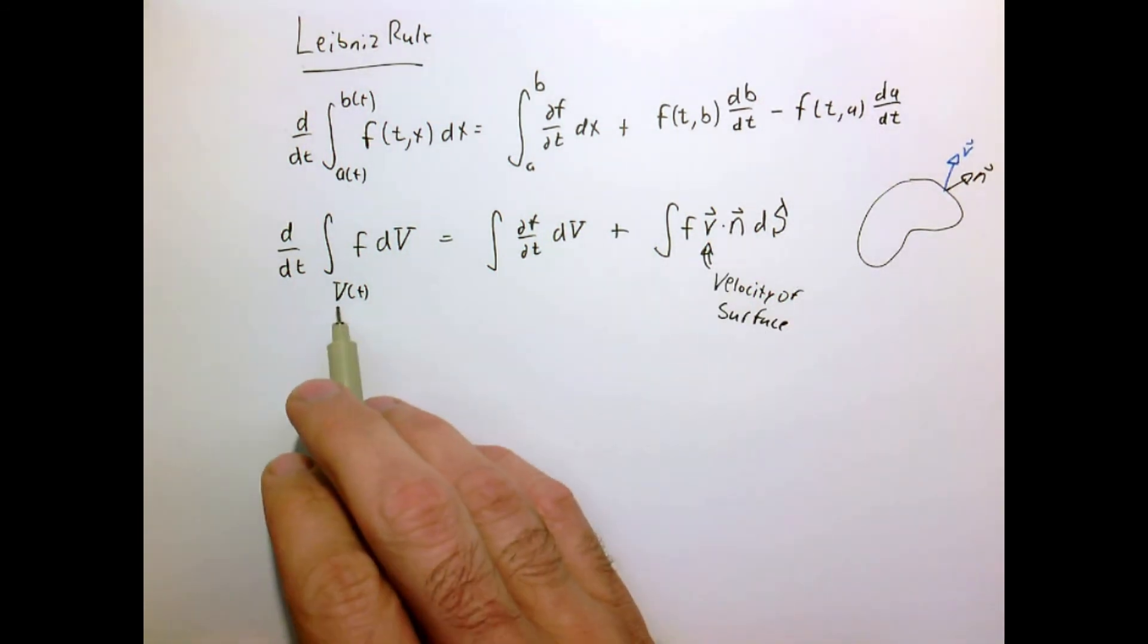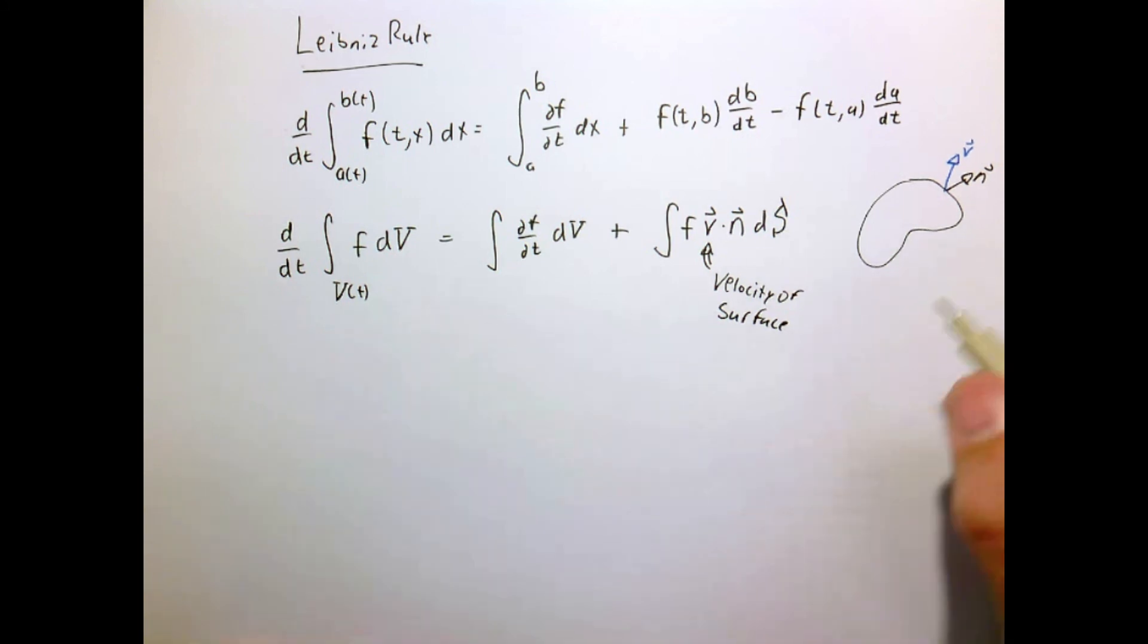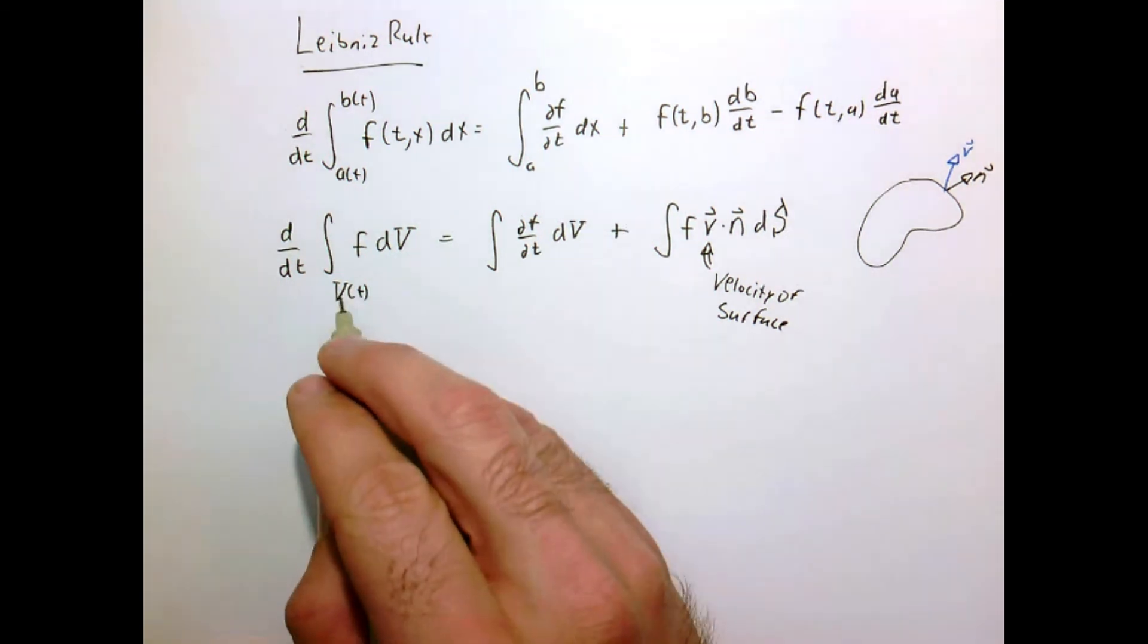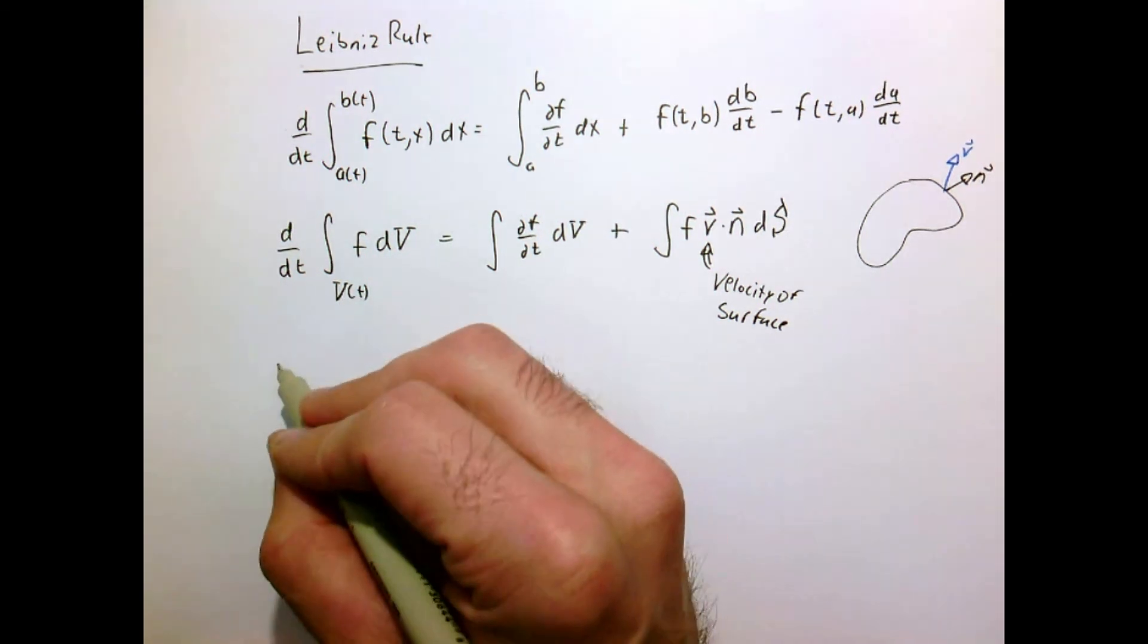Now let's take a special case where this volume has a particular physical meaning which is now it's a material region or a fluid particle. So it's a chunk of fluid that we're going to follow as it moves throughout. And it's the same matter and we're going to follow it as it moves through the flow. So now we're going to take this volume integral over a material region so it's something a little bit more physical.